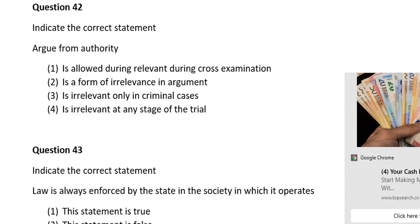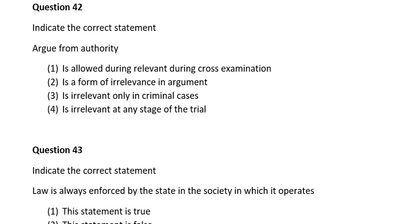Question forty-two. The correct answer is: arguing from authority is a form of irrelevant argument.